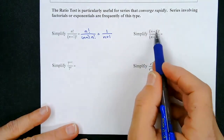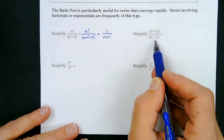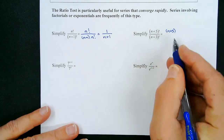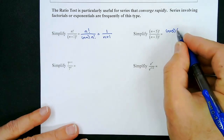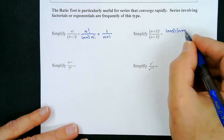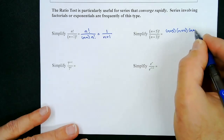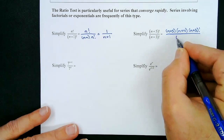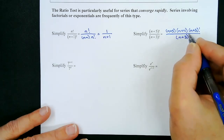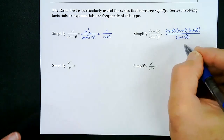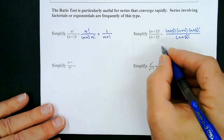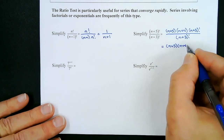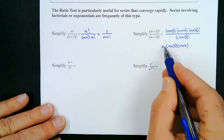Here's another factorial example: (n+5)! over (n+3)!. Since (n+5)! is larger, we expand it: (n+5)(n+4)(n+3)!. The denominator also has (n+3)!. So (n+3)! cancels with (n+3)!, and what we're left with is (n+5) times (n+4). So this reduces to (n+5)(n+4).